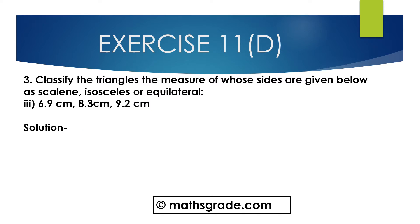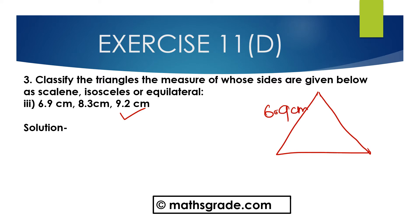Part c: 6.9cm, 8.3cm, and 9.2cm. In this triangle, three sides are given as 6.9cm, 8.3cm, and 9.2cm. All three sides are different — 6.9cm, 8.3cm, and 9.2cm are not equal. So this is a Scalene triangle.